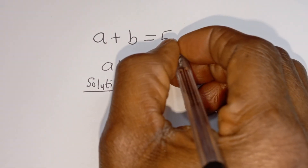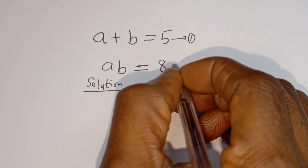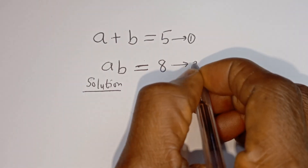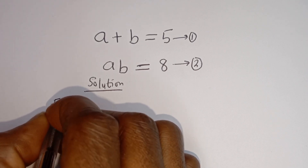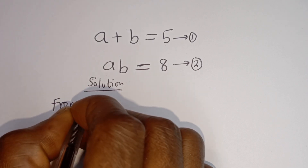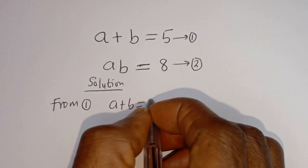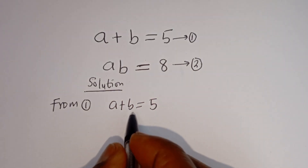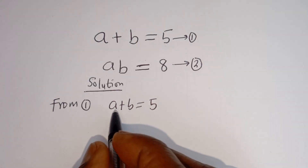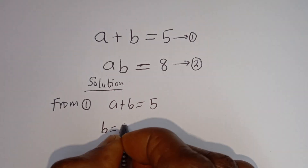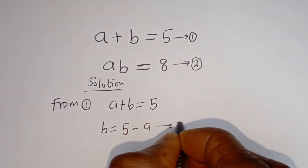A plus B is equal to 5 — let's call this equation 1. A times B is equal to 8 — let's call this equation 2. Then from equation 1, A plus B is equal to 5. Let's make B the subject of the formula — you may as well make A the subject. B is equal to 5 minus A. This is equation 3.